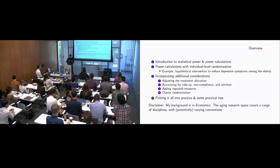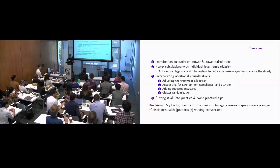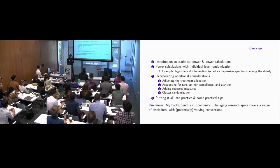As we were hearing about the differences across disciplines in health research reporting, the aging space is very broad. There's work going on in genomics and other areas that may have varying conventions around statistical power and how it's calculated. I'm coming at this from an economics background, so take that with a grain of salt, and please let me know if aspects are or aren't relevant to you.